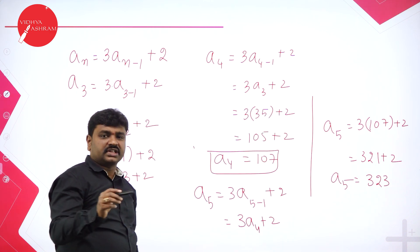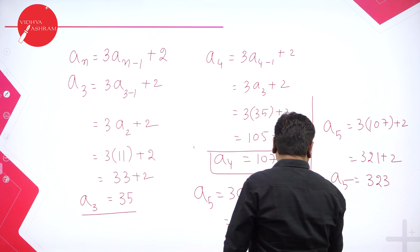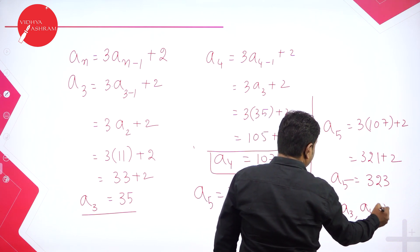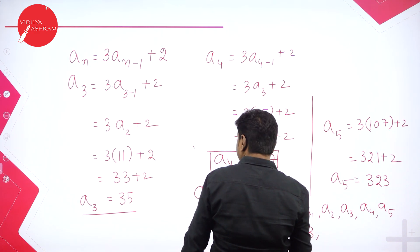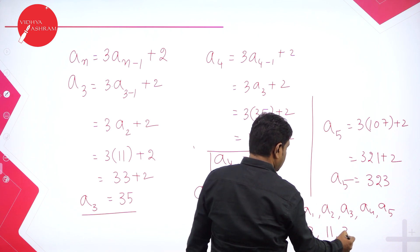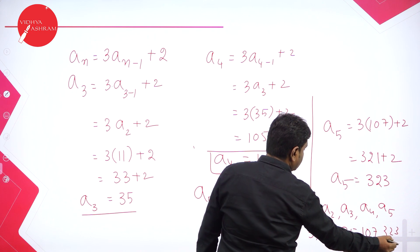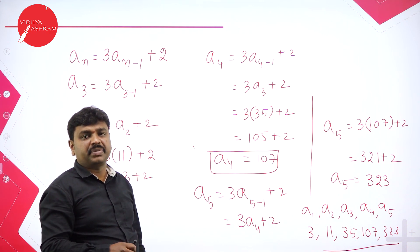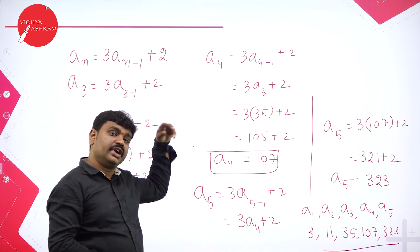So A1, A2, A3, A4, A5 are the five terms. A1 is given as 3. A2 we got as 11. A3 is 35. A4 is 107. A5 is 323. Each term depends on the previous term. If you want A2, you need to know A1; if you want A3, you need to know A2, and so on.